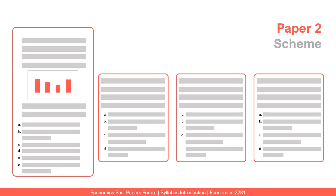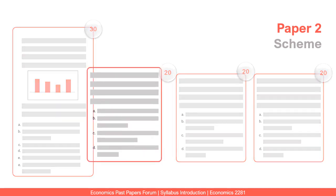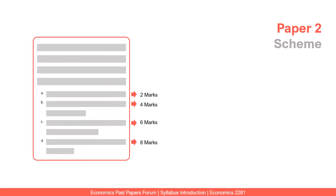The paper two scheme: you get a case and section A is usually 30 marks — it is compulsory. Then you pick three questions from section B, each worth 20 marks, bringing the total to 90 marks. Within each question, part A is 2 marks, part B is 4 marks, part C is 6 marks, and part D is 8 marks. Usually all parts are preceded by a small caselet or a few lines describing a particular scenario, and in parts C and D you may need to refer to the main case.